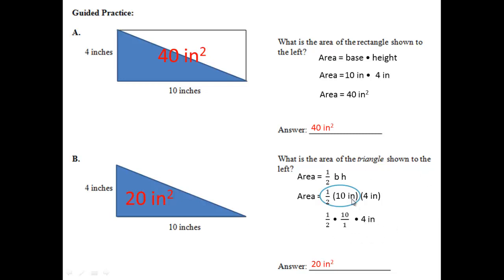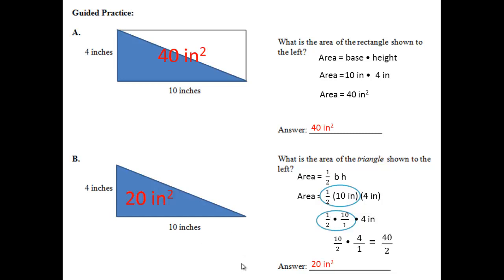One half times 10 over 1: 1 times 10 is 10, 2 times 1 is 2, giving you 10 over 2 times 4. Putting the invisible 1 underneath gives you 40 over 2, which is the same as 20. Going back to our units, this is square inches because we're multiplying inches times inches. Most important thing here: you need to know the area of a rectangle, and that will help you find the area of any triangle — one half base times height, or base times height divided by 2. I'll give everyone about 10 seconds to copy the rest of that down to make sure your computations are correct.